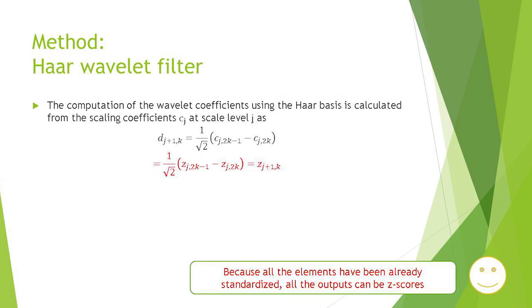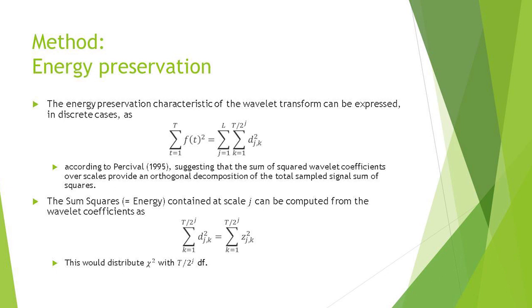I think this is important point. When wavelet analysis is used, the computation of the wavelet coefficients using Haar basis is calculated from the scaling coefficients and finally become Z-score, standardized. All the outputs can be Z-scores. And the energy preservation characteristic of the wavelet transform can be expressed in discrete cases. Like this, so sum squares decompose into period.